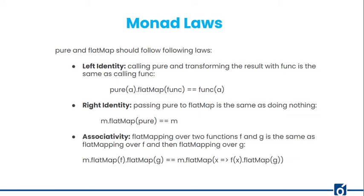The third law is associativity. Associativity says that flatMapping over two functions f and g is the same as flatMapping over f and then flatMapping over g. It does not matter which way you do it — they will be equal. Just keep these points in mind if you want to create a monad yourself so that it works well and is accepted as a monad.